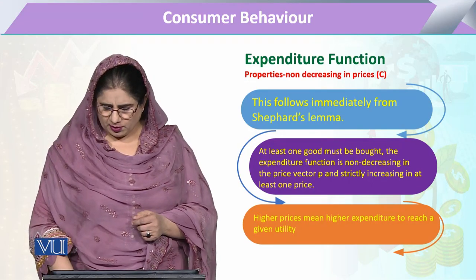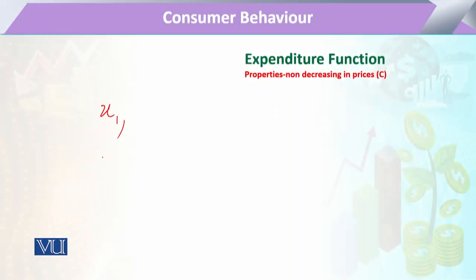Agar hum isko ab hum dekhein mukhtalif utilization of commodities ke hawale se, to agar hum dekhein aur hum apni ek example ko agar hum saamne dekhein, to consumer jo hai wo mukhtalif ashya kharidta hai. Lekin agar hum kahein ki usne ek share purchase kar raha hai jisko hum kahein ki wo x1 hai, jisko hum x axis pe kahein.